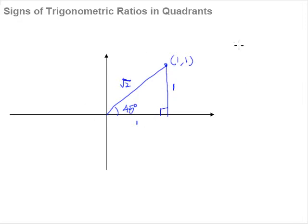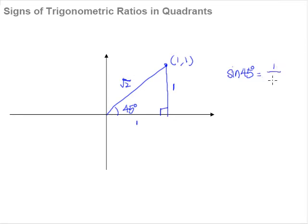Let's use sine as an example. Sine 45 degrees will be the opposite side over the hypotenuse side, and therefore it will be 1 over square root 2. So this is our sine 45 degrees.